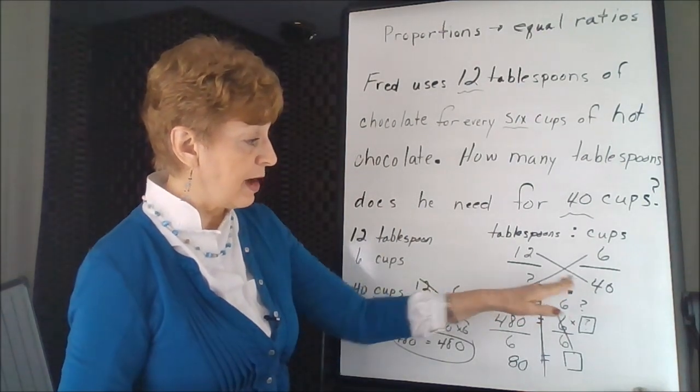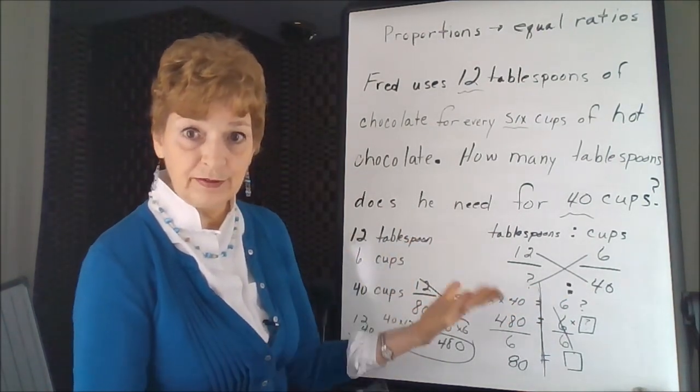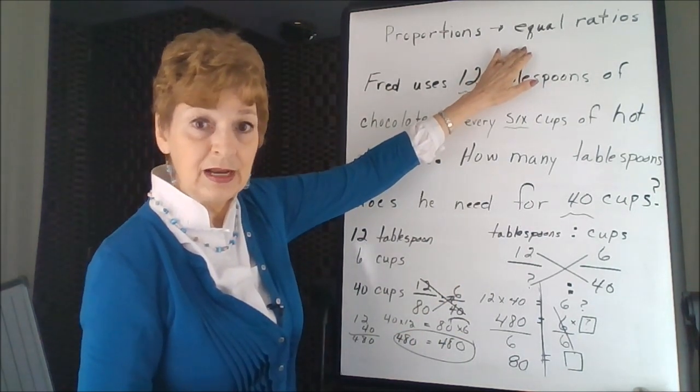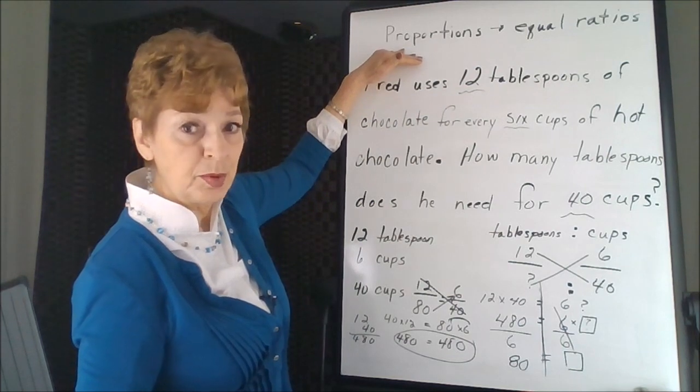You got equal fractions. Equivalent fractions make equal ratios. And equal ratios gives us a proportion.